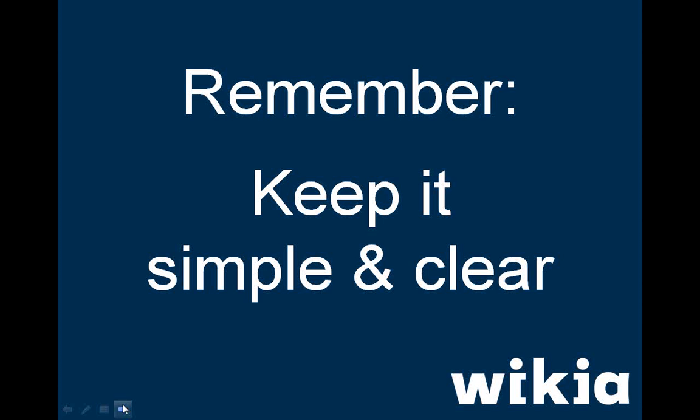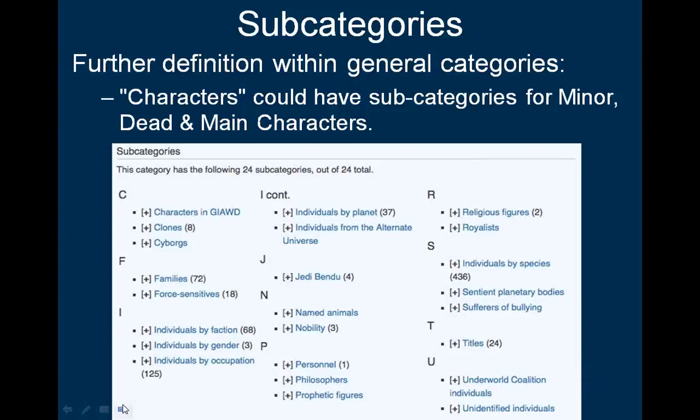That leads us into what's called subcategories. A category page itself can be in another category — this is what we call a subcategory. A Wiki that's grown a bit might have a category called Characters with subcategories for minor characters, former characters, and main characters. In the same way you can categorize a page, you can categorize a category. If you categorize 'Main Characters' with the category 'Characters', then Main Characters becomes a subcategory of Characters. A subcategory is simply a category within a category.